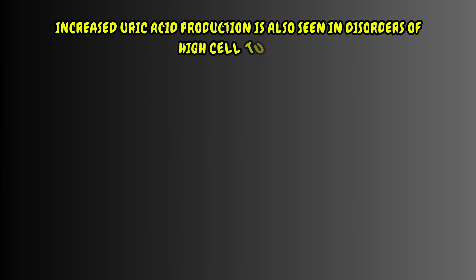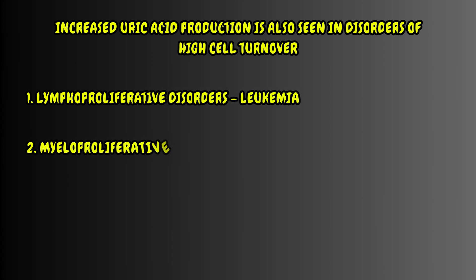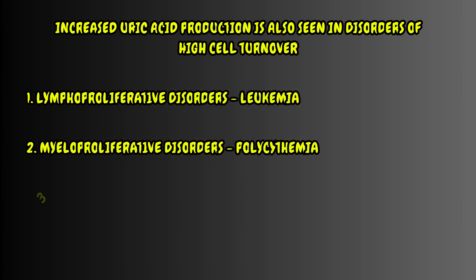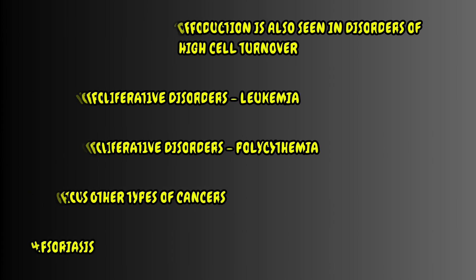Increased uric acid production is also seen in disorders of high cell turnover. These include lymphoproliferative disorders such as leukemia, myeloproliferative disorders such as polycythemia, and various other types of cancers and psoriasis.